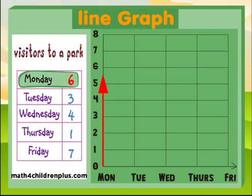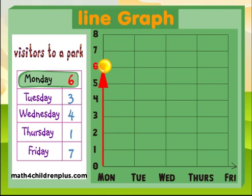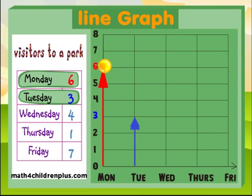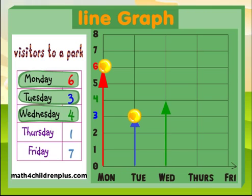On Monday, there were 6 visitors to the park. You put your first marker on 6 on Monday, where Monday and 6 meet. On Tuesday, there were 3 visitors to the park, so you put your second marker where Tuesday and 3 meet.